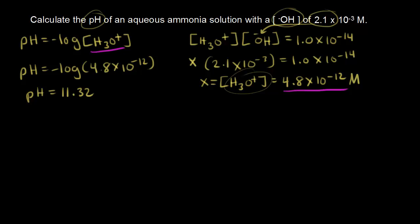We had two significant figures in our concentration, so we have two significant figures to the right of our decimal point. This pH is greater than 7. If your pH is greater than 7, you're talking about a basic solution, so our ammonia solution is basic. There's another way to do this problem — using pOH.